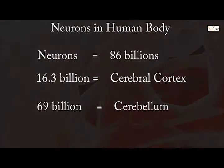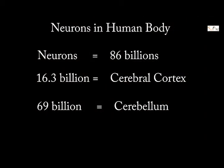Our brain contains 86 billion neurons, of which 16.3 billion are in the cerebral cortex and 69 billion are in the cerebellum.